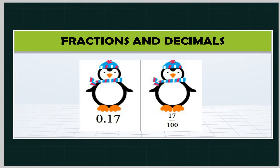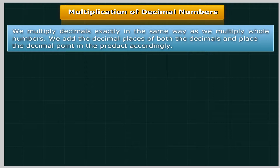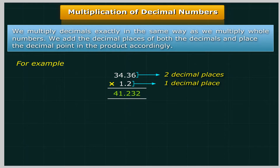Fractions and Decimals. Multiplication of Decimal Numbers: We multiply decimals exactly in the same way as we multiply whole numbers. We add the decimal places of both the decimals and place the decimal point in the product accordingly. For example, 34.36 with two decimal places multiplied by 1.2 with one decimal place is equal to 41.232 with three decimal places.